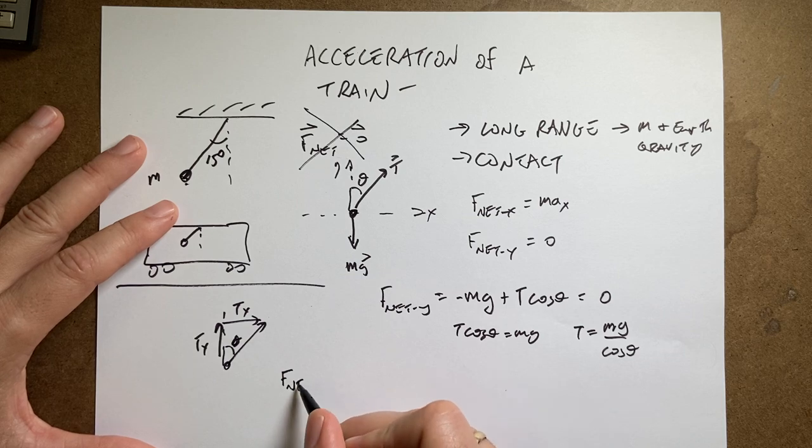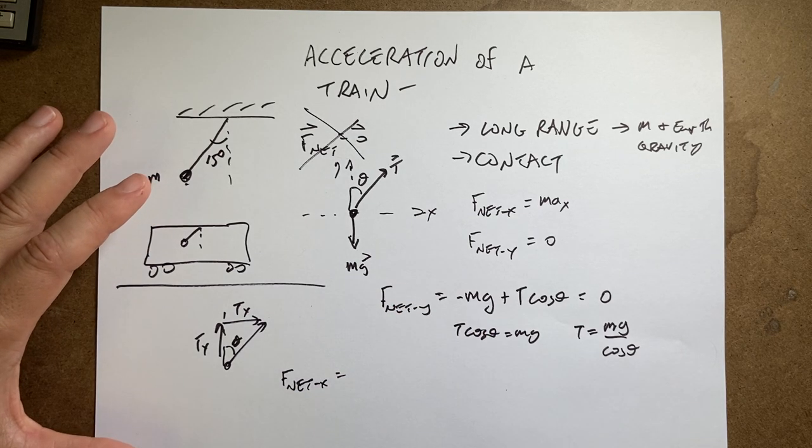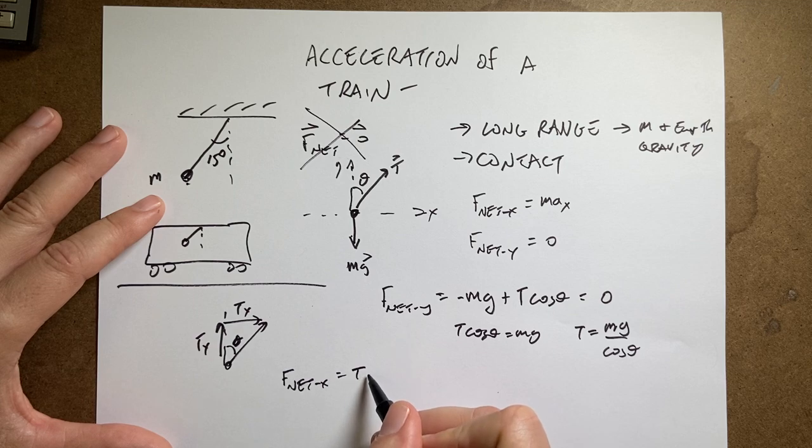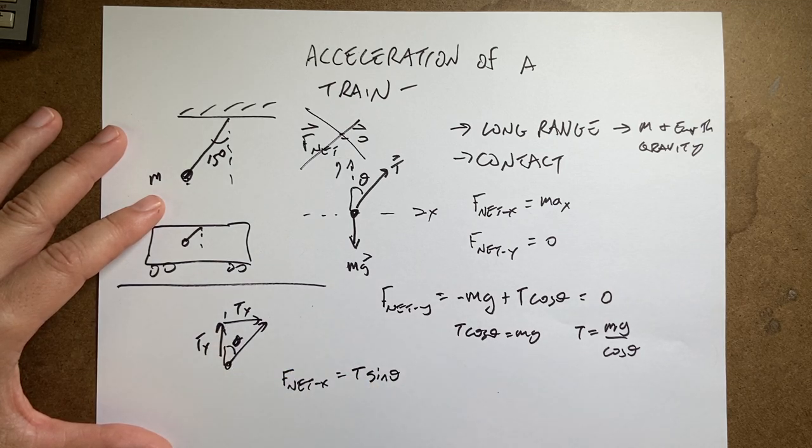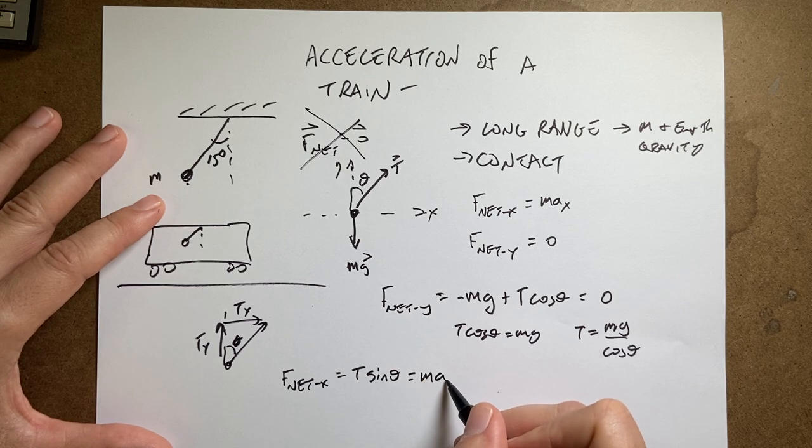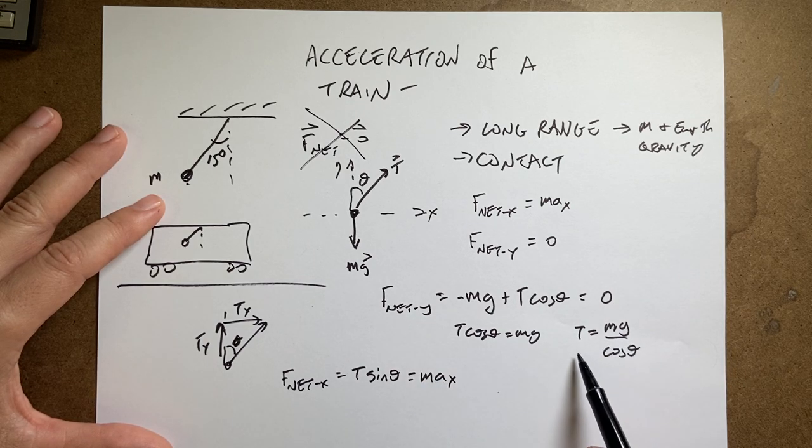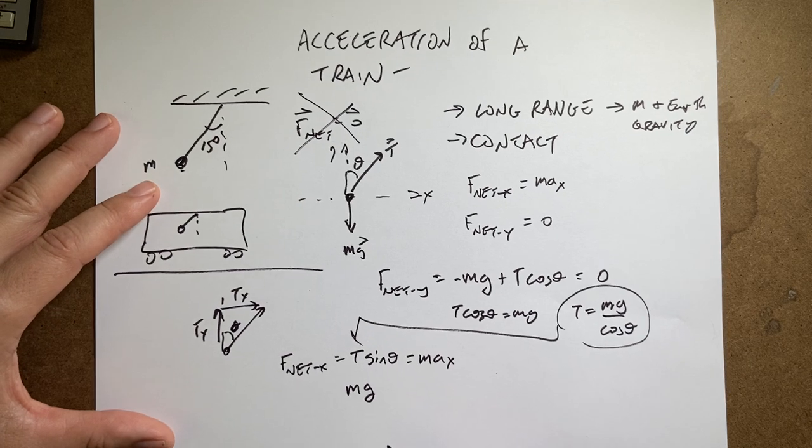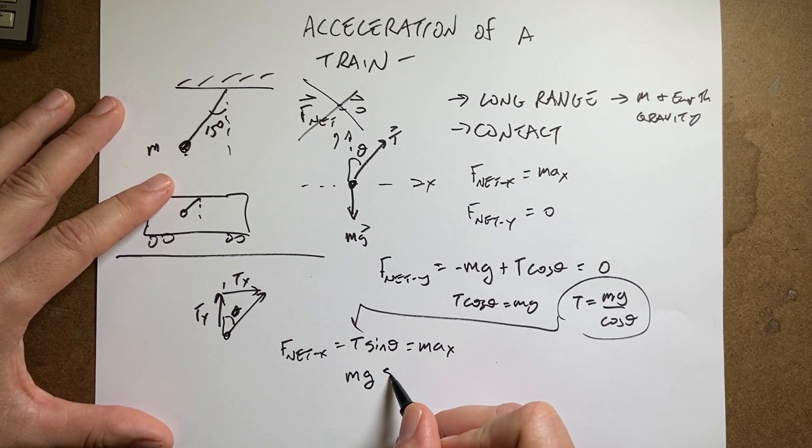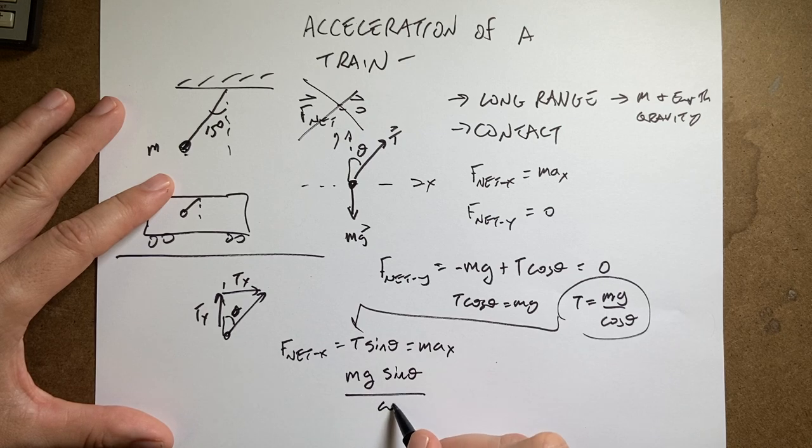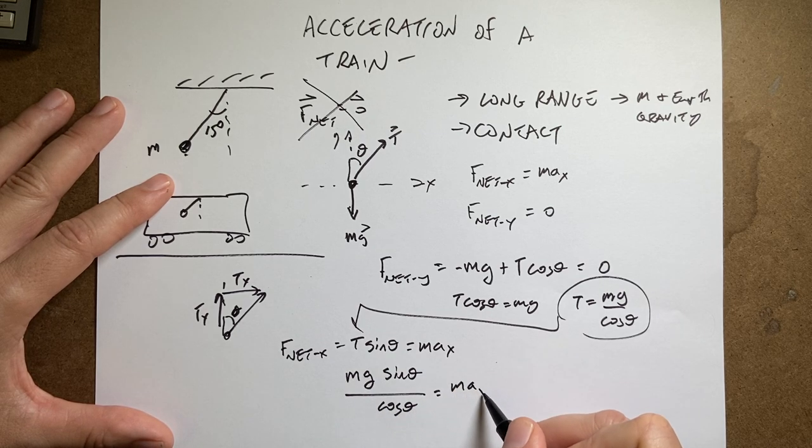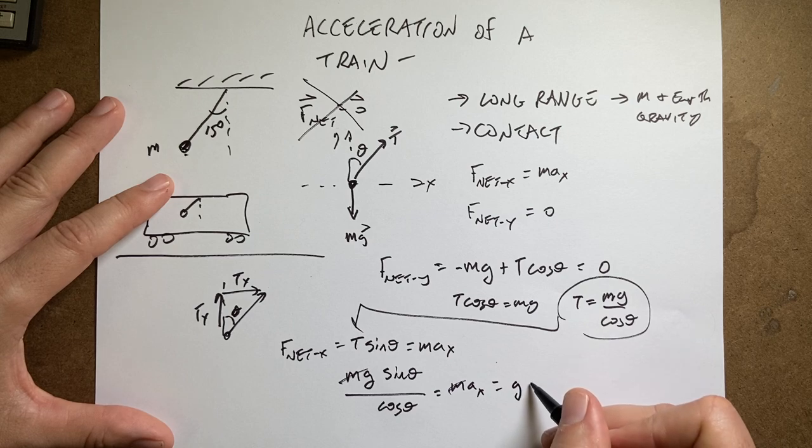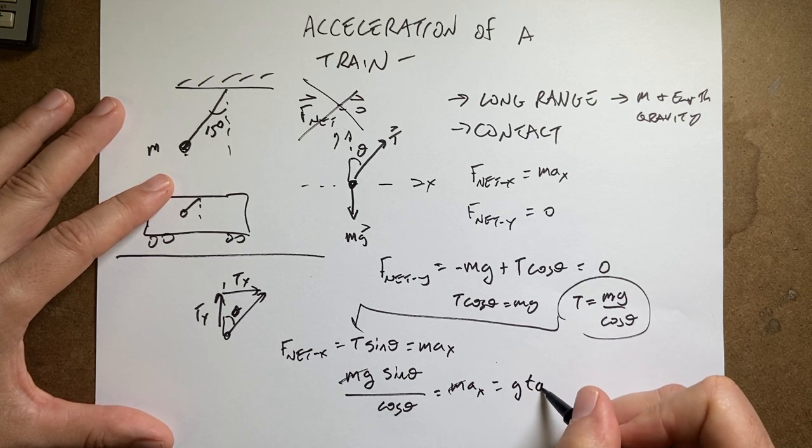F net x equals, what force is acting in the x direction? Well, I have part of this tension force. It's going to be that tx. So this is t sine theta because it's the opposite side. And that's going to be equal to m times ax. Now I can put in my expression for t into there. And I get mg sine theta over cosine theta equals max. The masses cancel. Yay. And I'm done. So I get ax equals g sine theta over cosine theta, which is equal to tangent theta. You don't have to put that in there.